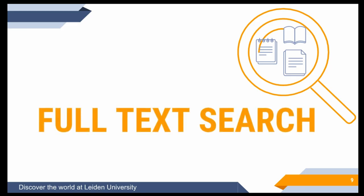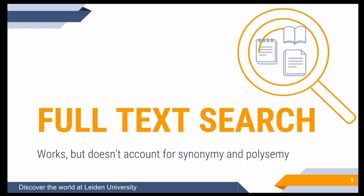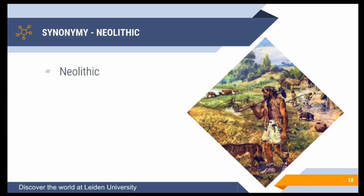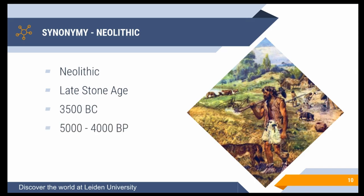This can be done using full-text search — a well-known example is Google — which makes it possible to search through all the text in a document collection. That's already a lot better, but it doesn't account for synonymy or polysemy: synonymy being two words having the same meaning, polysemy being one word having multiple meanings. For example, 'Neolithic' can also be written as 'Late Stone Age,' or as a range of dates like 3500 BC, 5000–4000 BP, 4th millennium BC — all falling within the Neolithic.